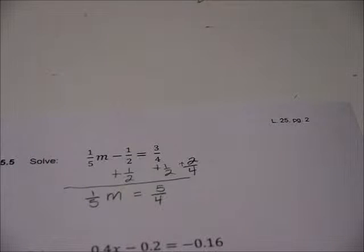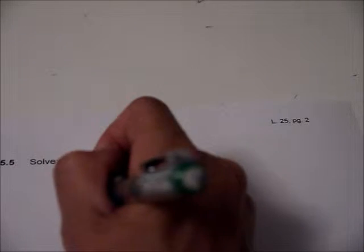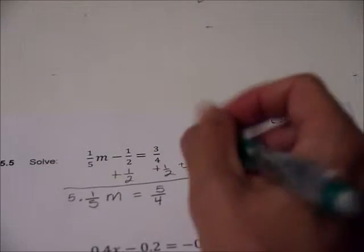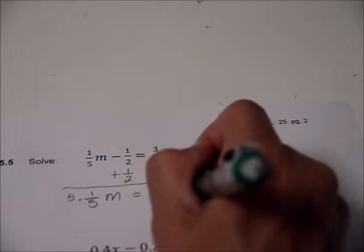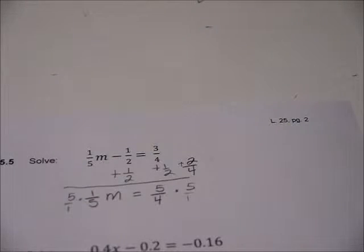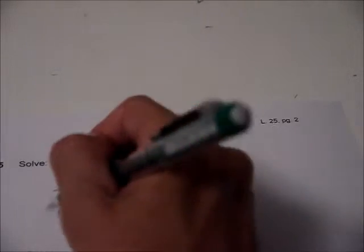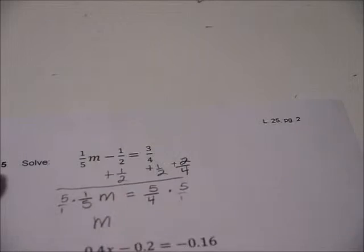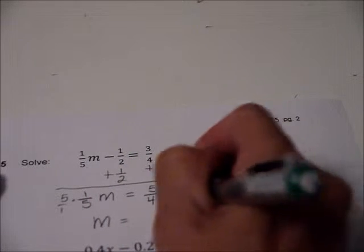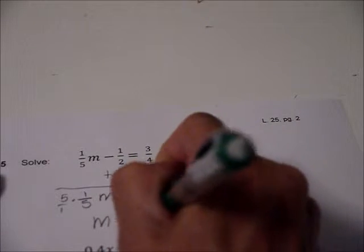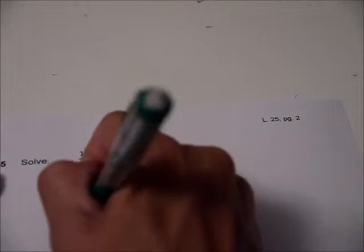And then we are going to multiply both sides by five or five over one. Same deal. So we could have written it like that, right? And these guys cancel out, leaving the M. And this is 25 fourths. And that is it.